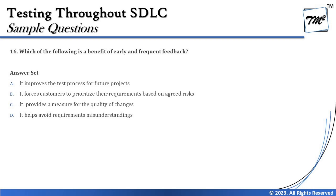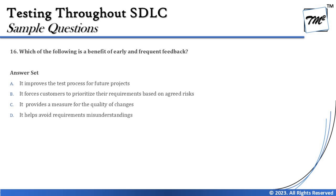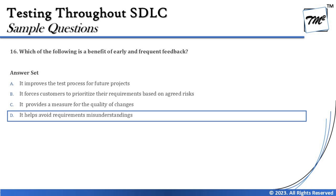Option D says: it helps avoid requirements misunderstanding. This aligns exactly with what early and frequent feedback is about — getting aligned to business expectations when requirements are high-level or vague. Interacting with the business and demonstrating progress gives us better clarity on their needs. So the right answer for question 16 is D: it helps avoid requirements misunderstanding by conducting early and frequent feedback.